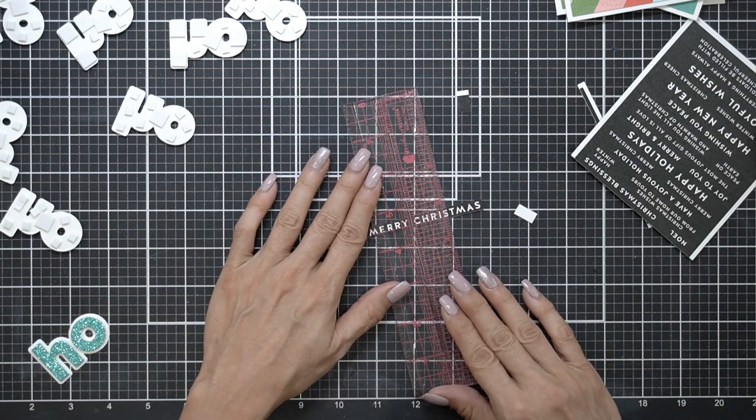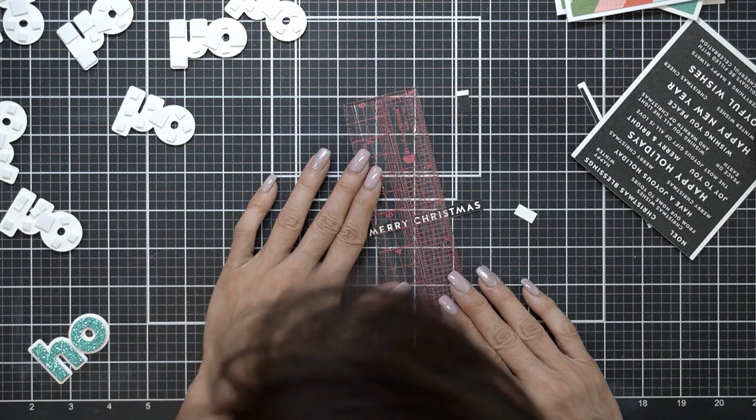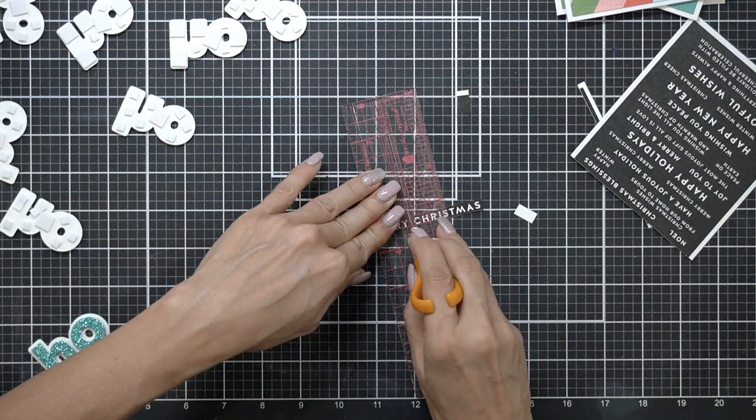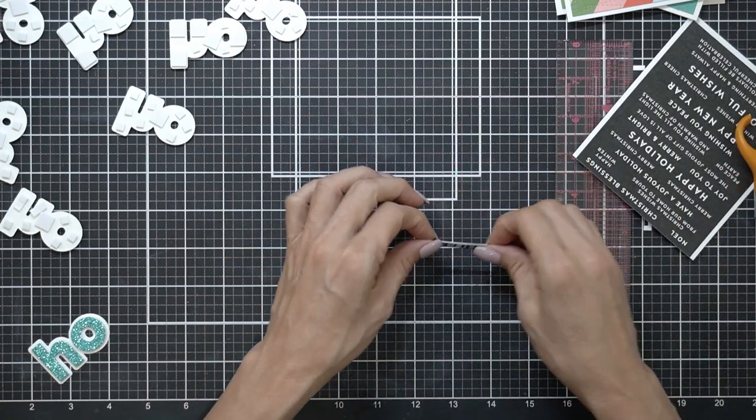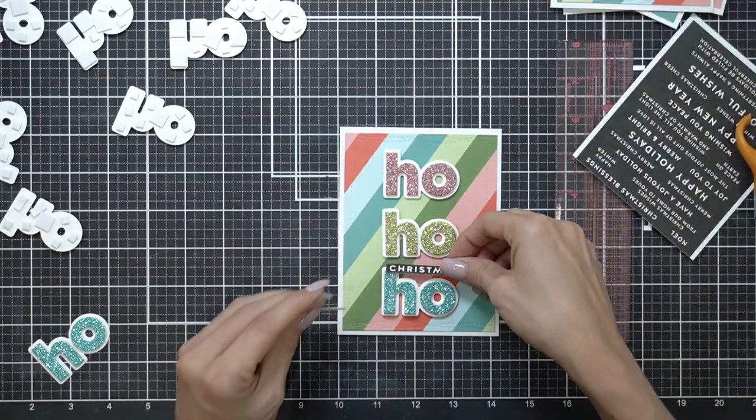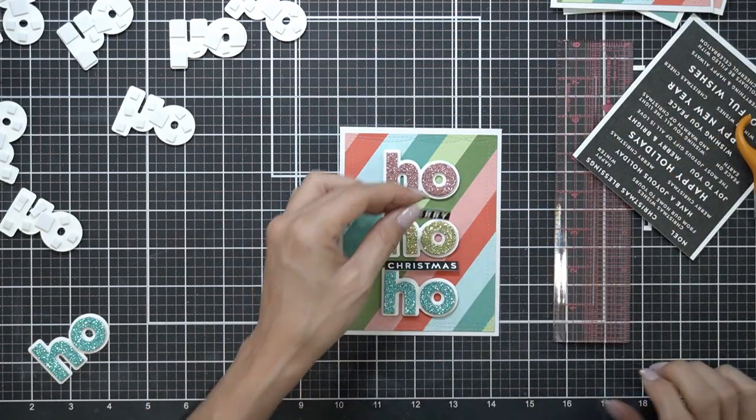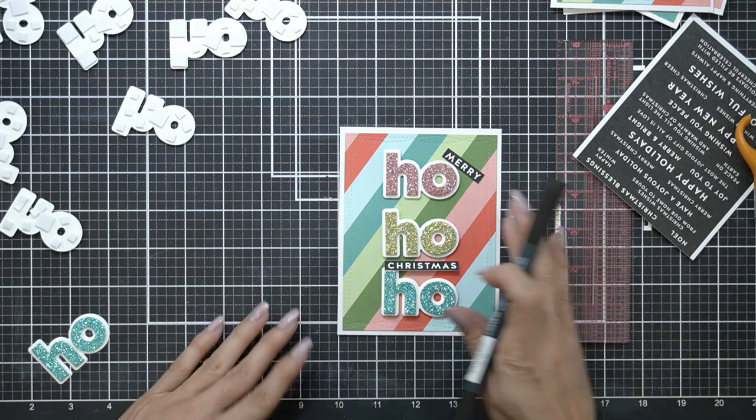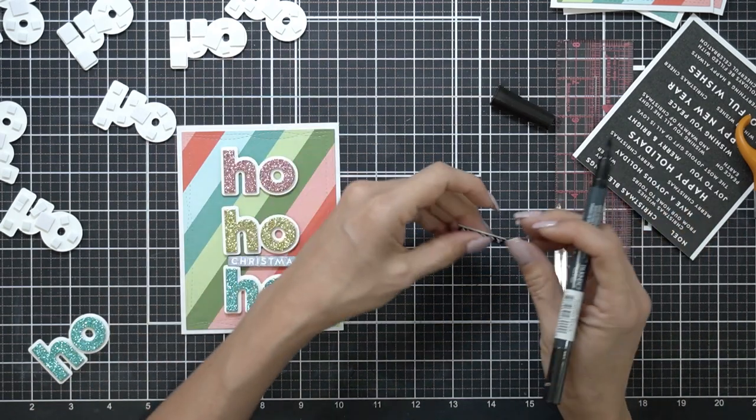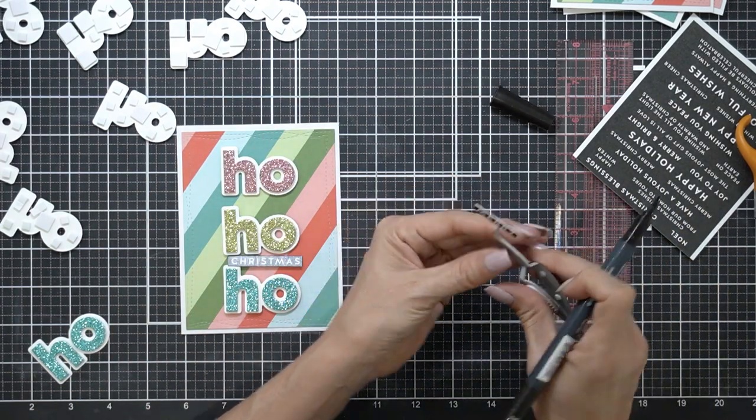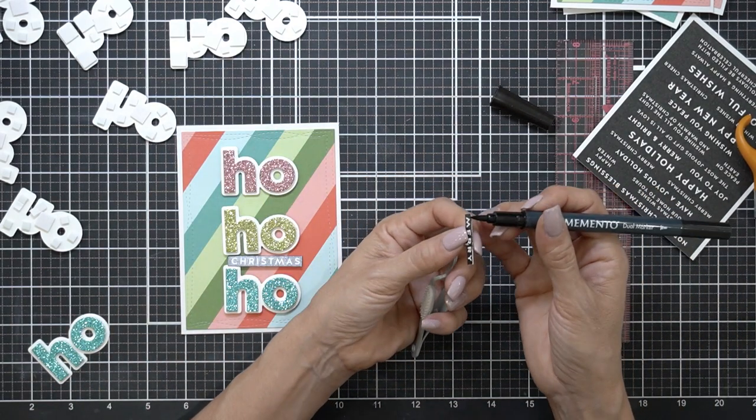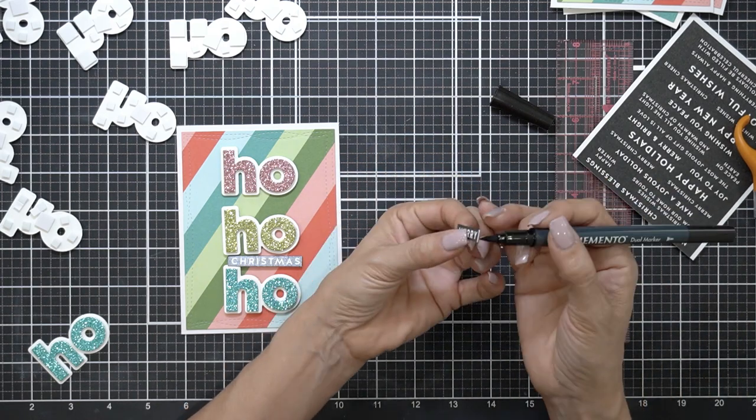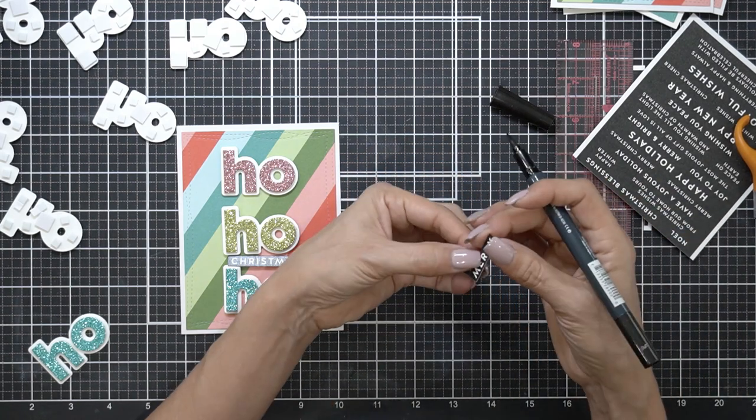So I'm just going to split up the space between the Merry and the Christmas, so I'm just figuring out where I want to make it, and I'm using the lines to guide me on where I'm going to run my blade. Now that those two are cut apart, I'm going to run a black marker around the edges, so you won't see the white cardstock underneath, and that gives you a more finished look.